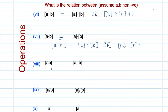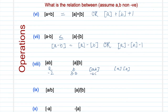Let's get started with property number 8 using some examples. Let's make a grid with columns: a, b, ⌊a·b⌋, and ⌊a⌋·⌊b⌋. Assume a = −2 and b = 3.3. So ⌊a·b⌋ = ⌊−6.6⌋ = −7, and ⌊a⌋·⌊b⌋ = (−2)·(3) = −6. The relationship here is less than.